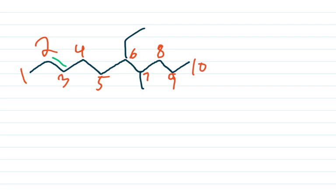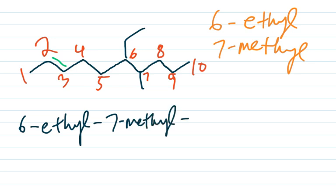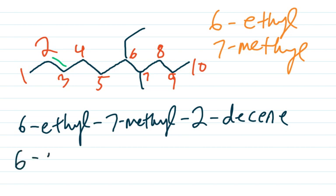Now let's name the substituents: we have a 6-ethyl and a 7-methyl, with a double bond on carbon two. E comes before M alphabetically, so ethyl comes first. That gives us 6-ethyl-7-methyl, and then the double bond is at carbon two. The chain is 10 carbons — for an alkane that'd be decane, but since it's an alkene it's decene. So we have 6-ethyl-7-methyl-2-decene.